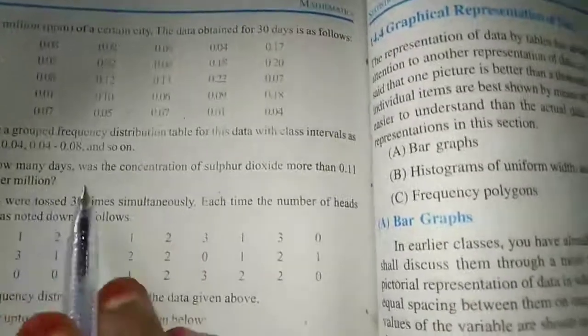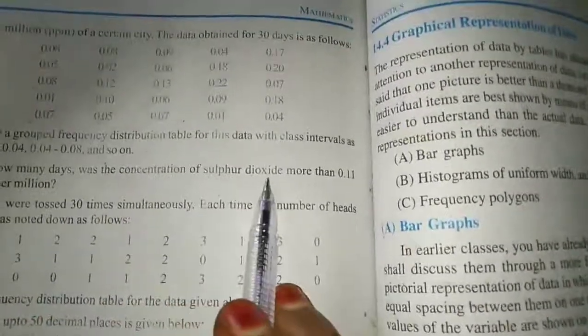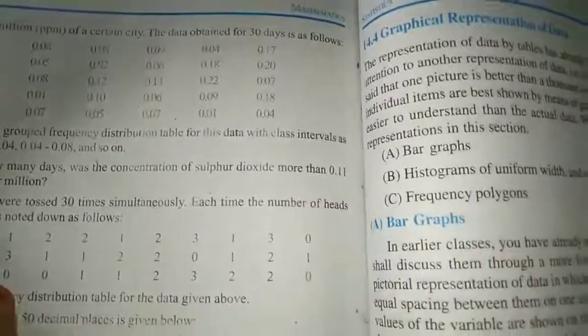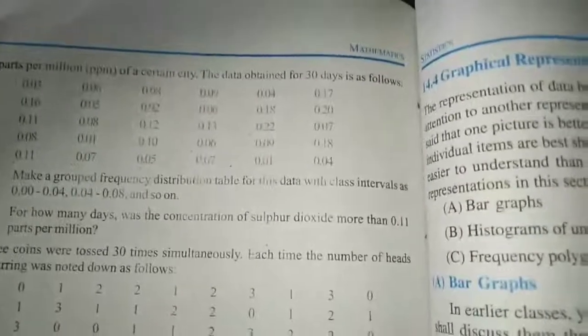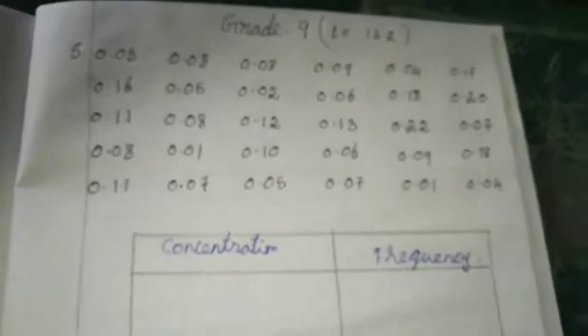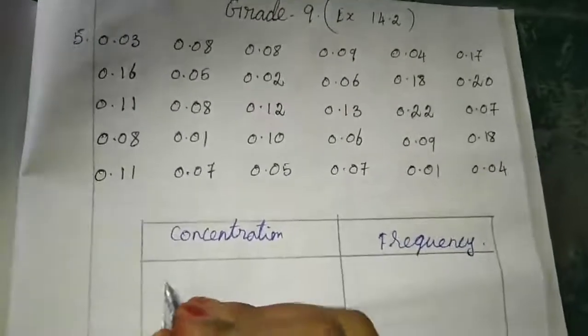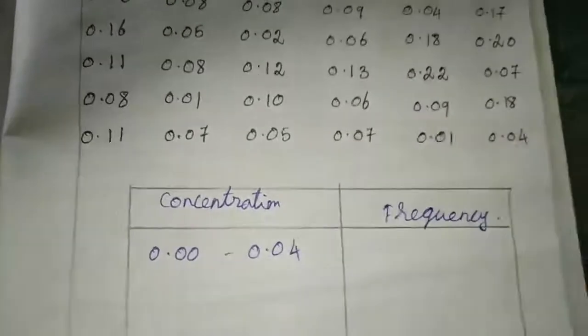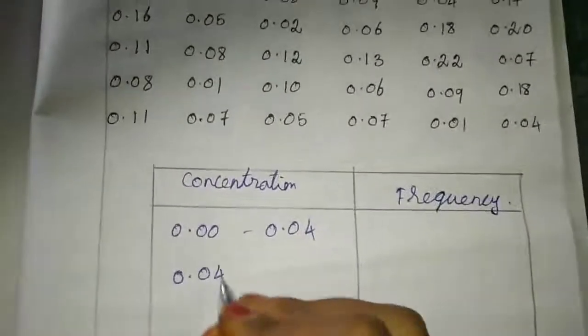For how many days was the concentration of sulfur dioxide more than 0.11 parts per million? They gave ppm, the explanation is parts per million. Now I am going to form a frequency distribution table. I wrote the data as whatever they gave.